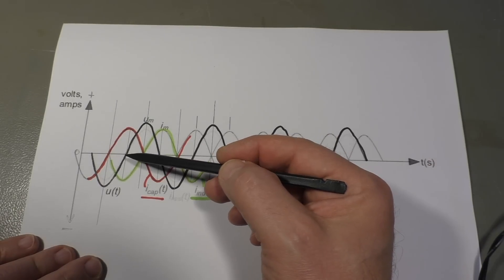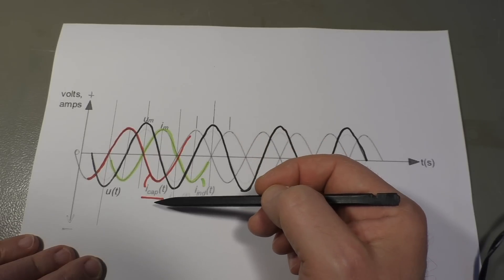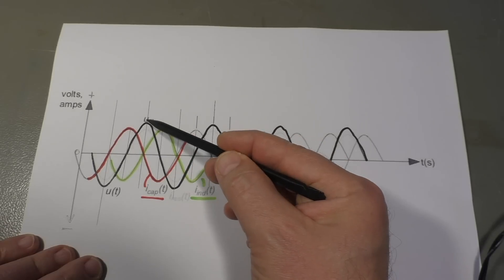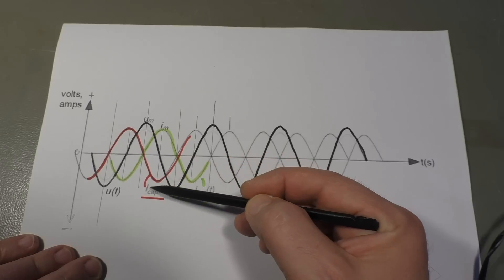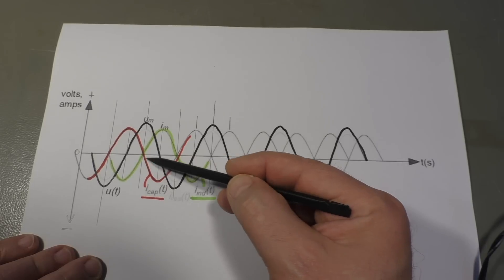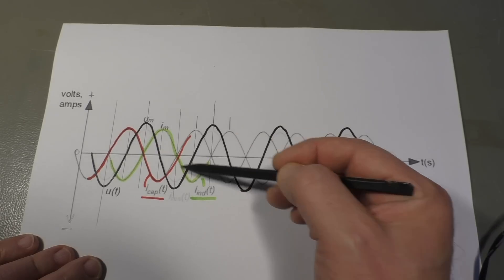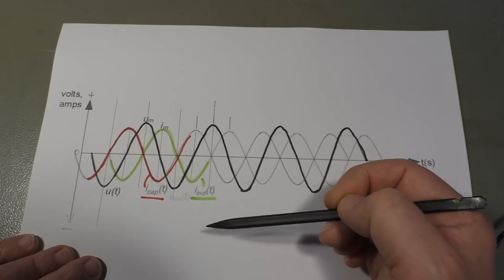Let's look at the diagram. We have the black line here which is the voltage, negative and positive peak. The red line would be an inductive load and the green line would be a capacitive load.